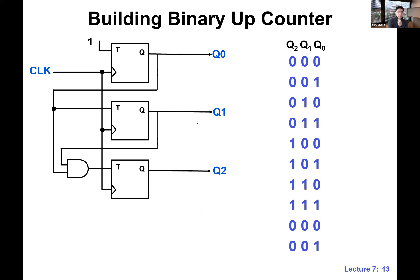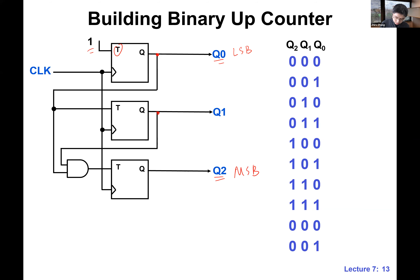Here's the counter — surprisingly regular and simple. The LSB flip-flop has T connected to one, so LSB toggles every single clock cycle. Then Q0 is connected to the T input of the next flip-flop, so that bit toggles every time Q0 is one. For the MSB, we connect both Q0 and Q1 — when both are ones, in the next cycle Q2 is going to toggle. This is how we build a counter.